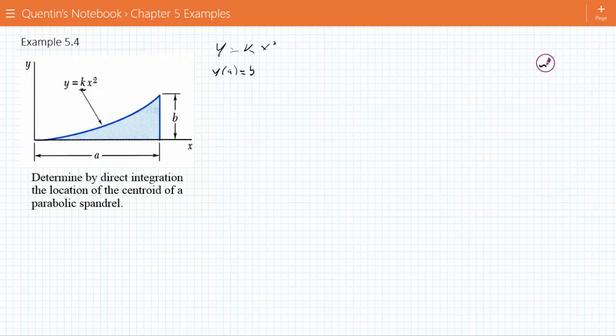So we're going to say y is equal to k x squared. But we do know y at a is equal to b, which is equal to k times a squared. So therefore k is equal to b over a squared. So let's rewrite this right from the get go: y is equal to b over a squared x squared. Okay, so that's the equation that we're working with.